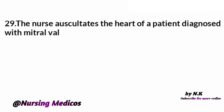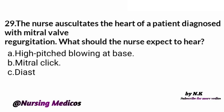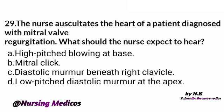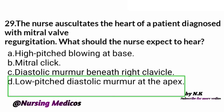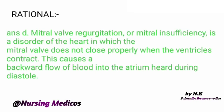Question 29: The nurse auscultated the heart of a patient diagnosed with mitral valve regurgitation. What should the nurse expect to hear? Options: A) High-pitched blowing at the apex, B) Mitral click, C) Diastolic murmur beneath right clavicle, D) Low-pitched diastolic murmur at the apex. Answer is D. The rationale is mitral valve regurgitation is a disorder of the heart in which the mitral valve does not close properly when the ventricles contract, causing backward flow of blood into the atrium.